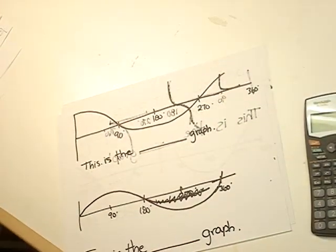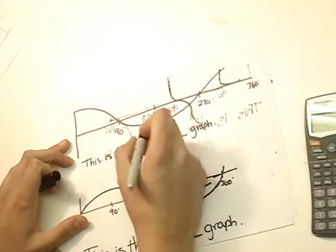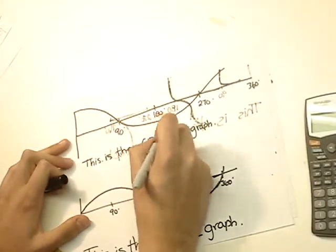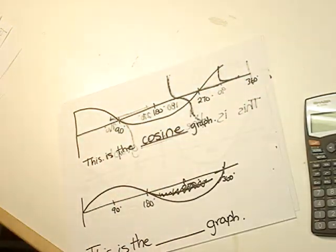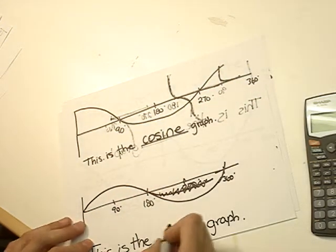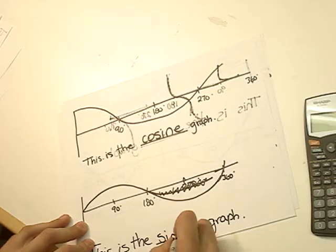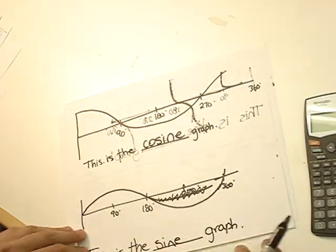Just a quick review of the graphs. If we look at this, this is the cosine graph. Curves down, touches 90, curves up again, touches 270. This is the sine graph. Remember, touches 180, curves back up, touches 360.